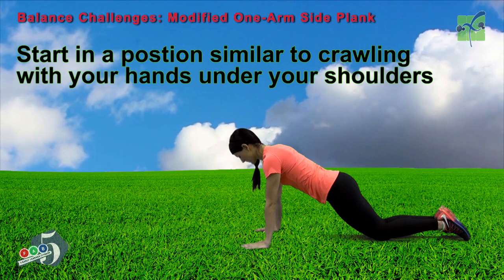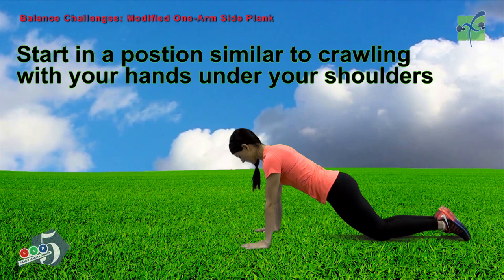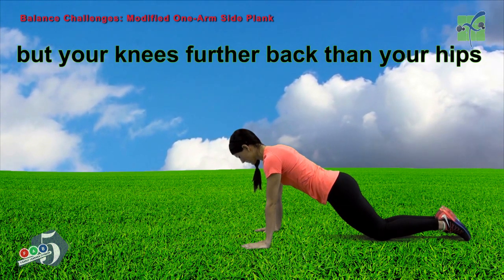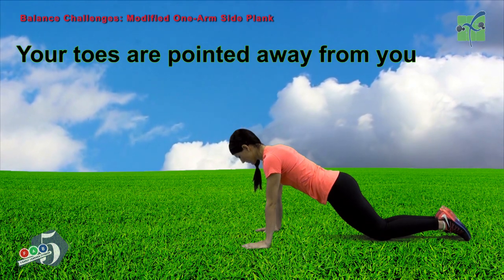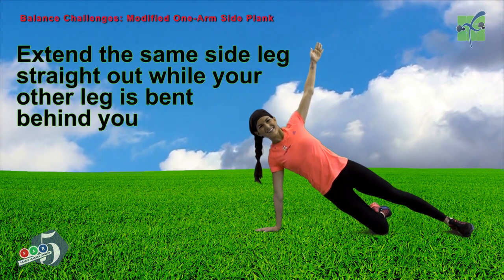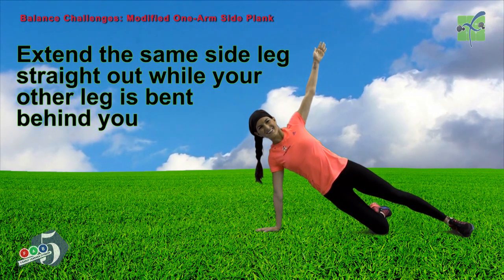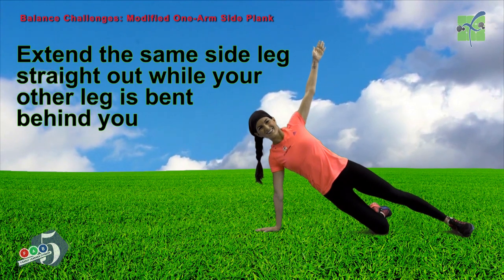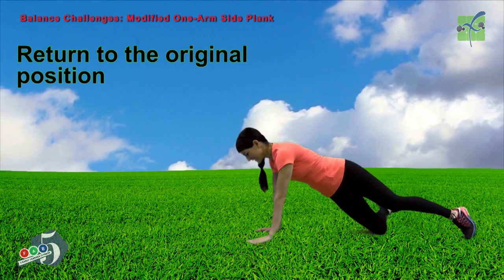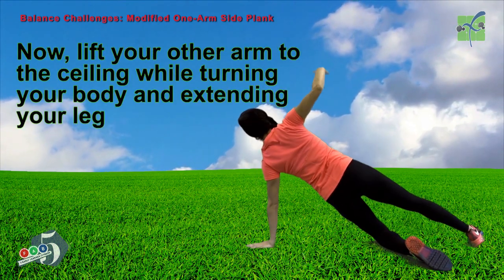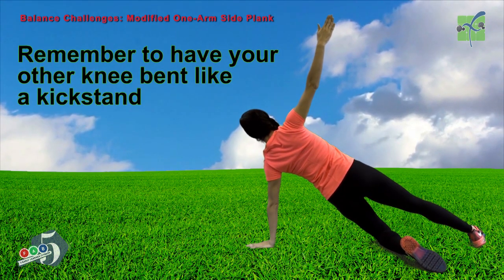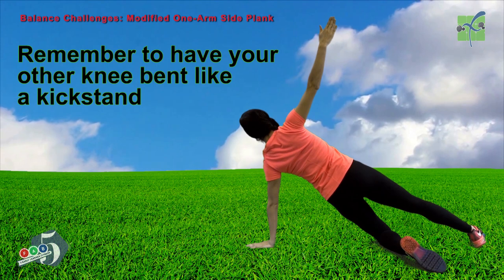Start in a position similar to crawling with your hands under your shoulders, but your knees further back than your hips. Your toes are pointed away from you. Now lift up one arm toward the ceiling while turning your body. Extend the same side leg straight out while your other leg is bent behind you — like a kickstand on a bike. Return to the original position. Now lift your other arm to the ceiling while turning your body and extending your leg. Remember to have your other knee bent like a kickstand.